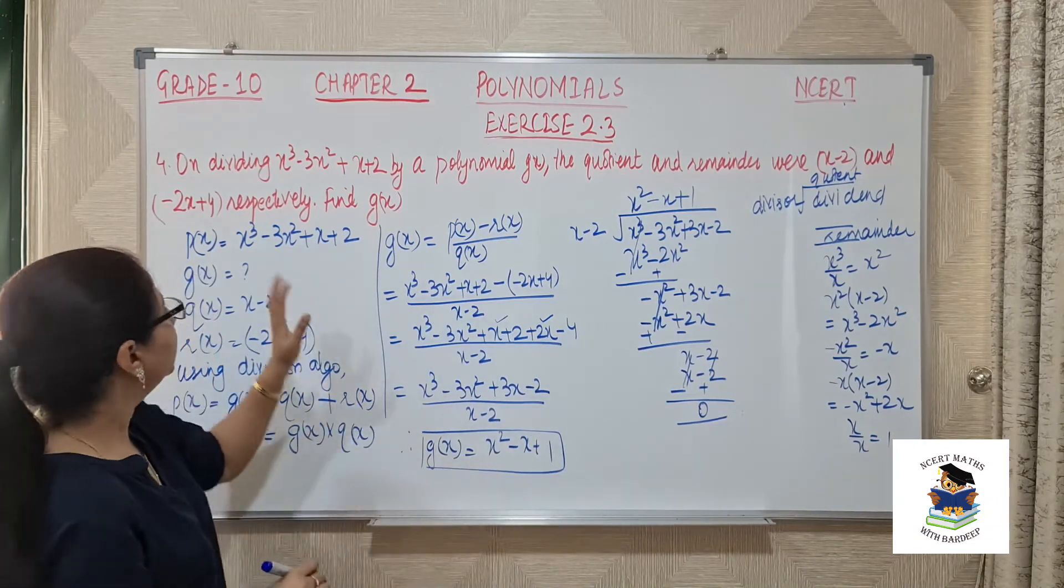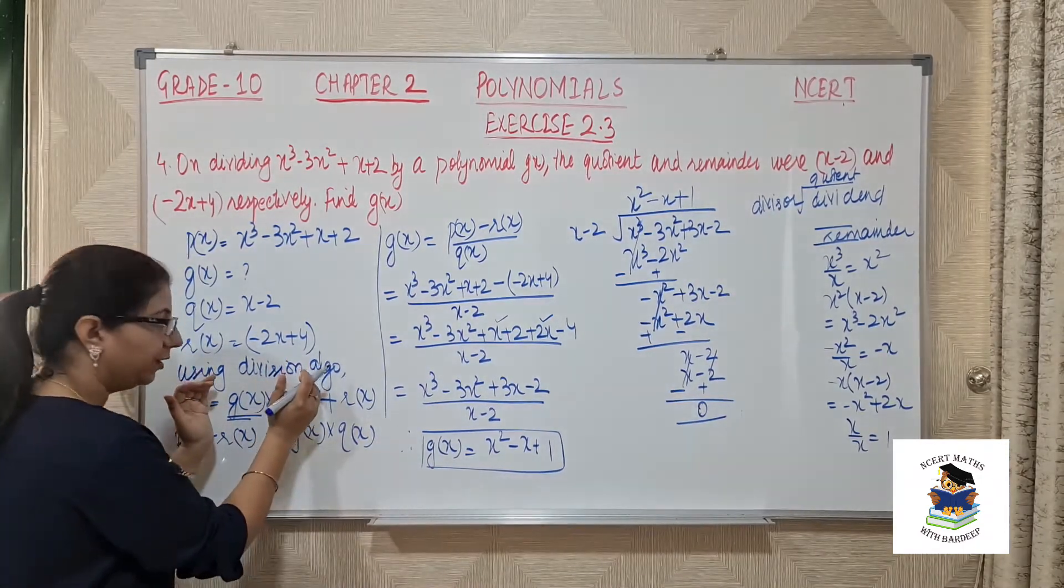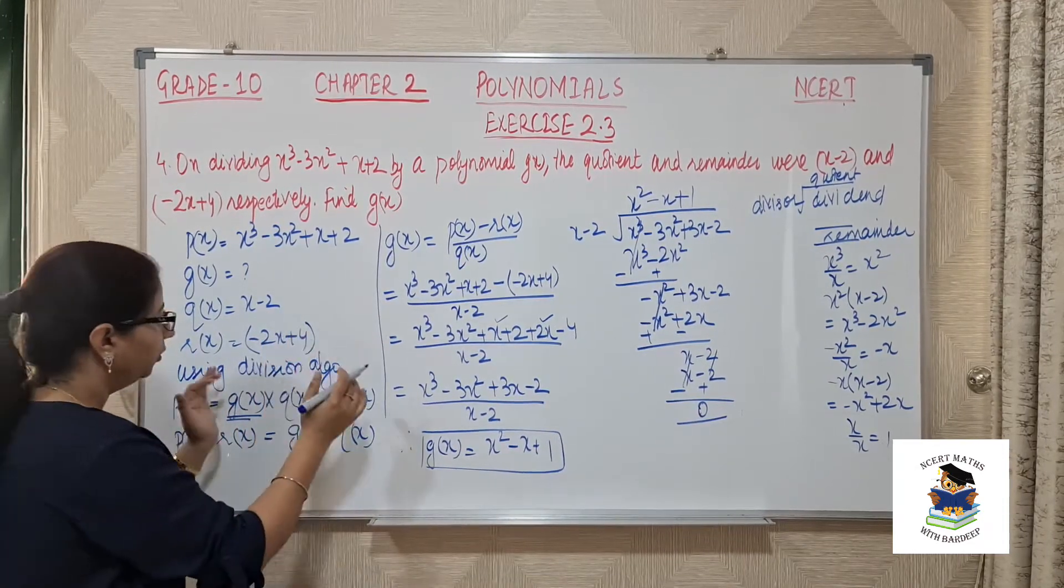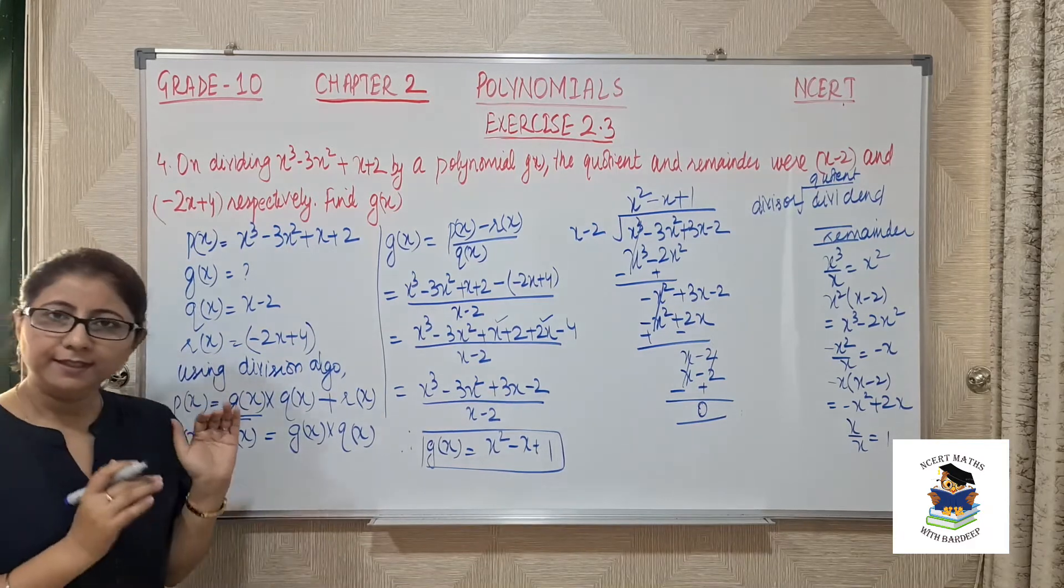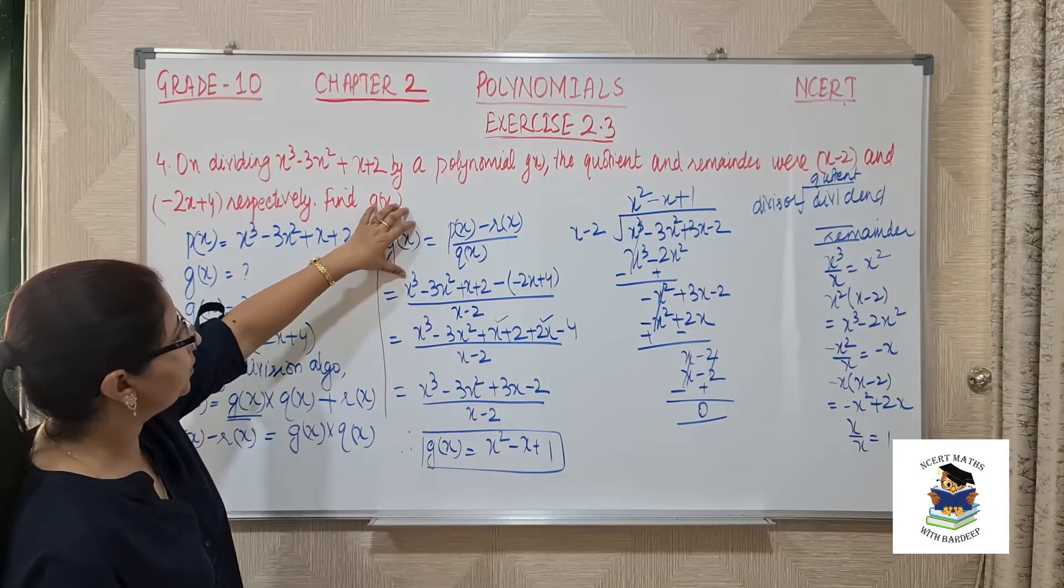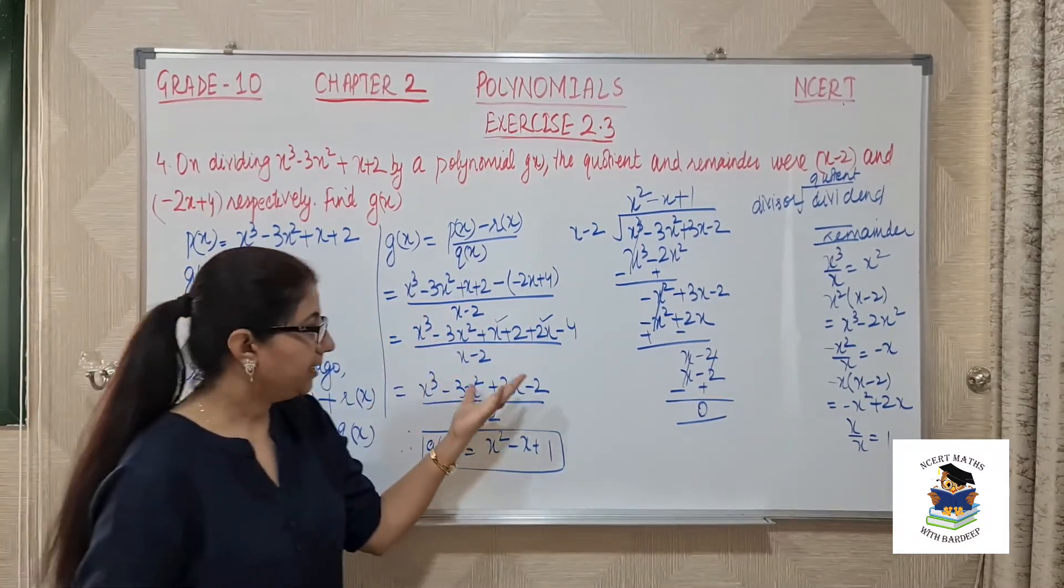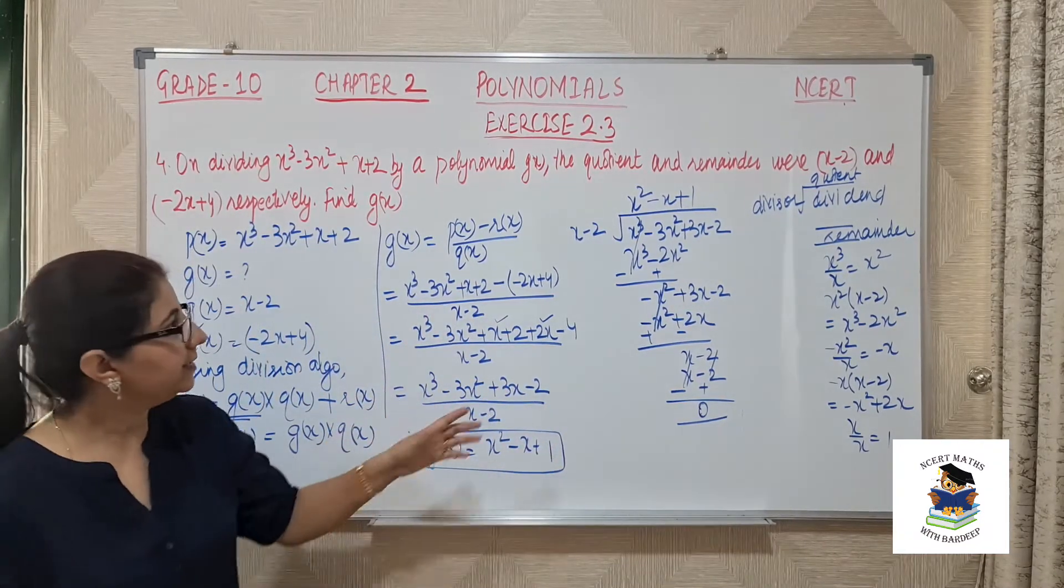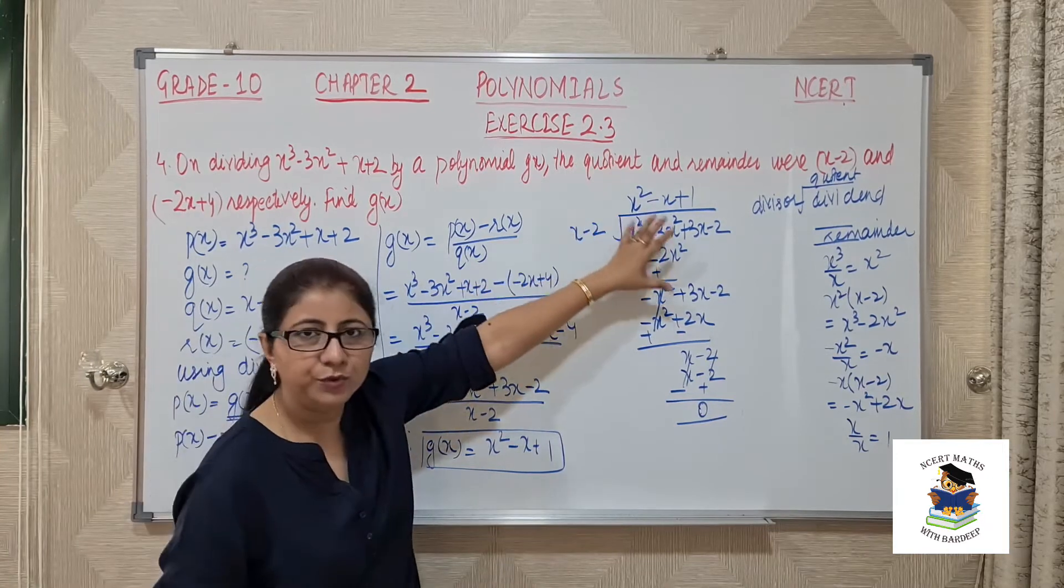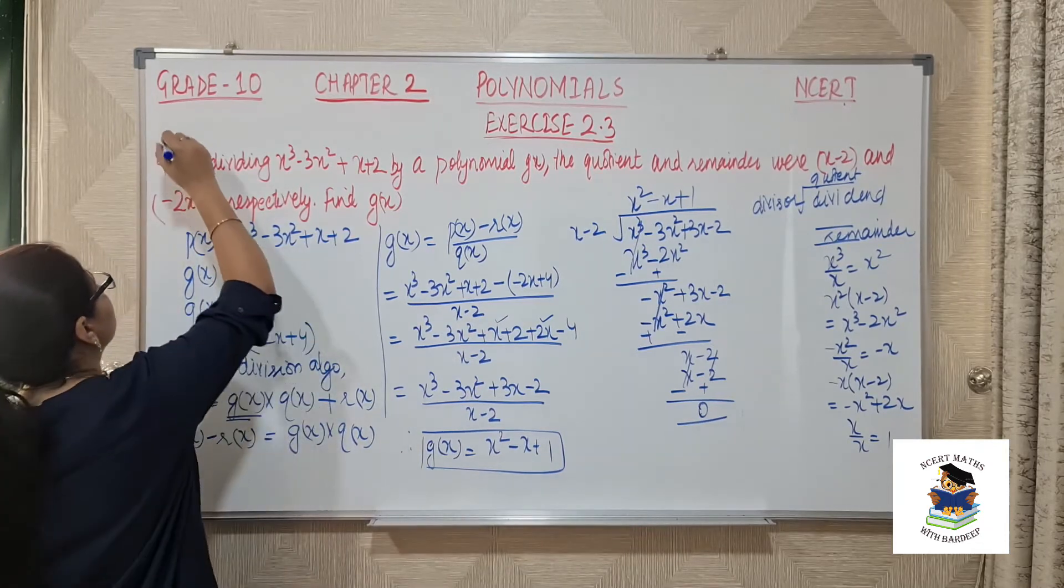What we have done is, I will repeat, we have used division algorithm. That is, dividend is always equal to the product of divisor with quotient, and we will add remainder to that product. That answer should be equal to your dividend. After using this, we have shuffled whatever is required and found the value of gx by substituting the values in the expression. Then we divided that, and the quotient of this division is our final answer.